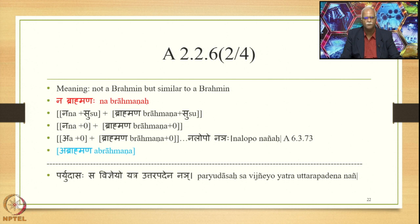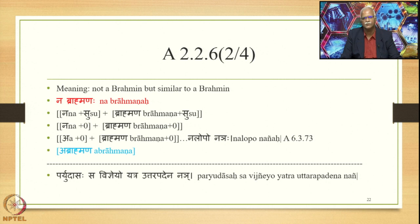The peculiar position of the negation marker Na is notable. Generally in Sanskrit, Na is negated with the verb and indicates negation of the verb (Prasajya Pratishedha). But in the process of compounding, Na is always related with the Subanta, and in that case it always means Tadbhinna Tatsadrusha (Paryudasa). The traditional statement is: 'Paryudasasavidnyayo Yatrotarapadena Na' — when Na is related with the Uttarapada, the meaning of Na is always Paryudasa.